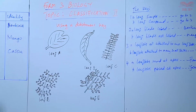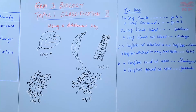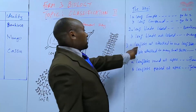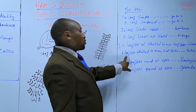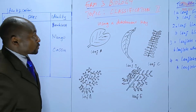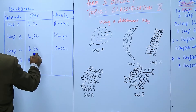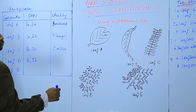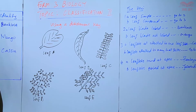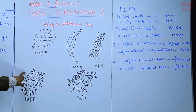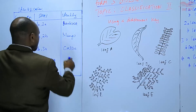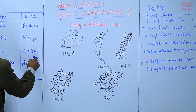For leaf D, it is also a compound leaf, so step 1b, go to step 3. Leaflets attached to one leaf stalk — no. Leaflets attached to many small stalks — yes, this one is attached to many small stalks, so that is step 3b. Then we go to step 4: leaflets rounded at the apex or pointed. These ones are rounded at the apex, so that is step 4a. The identity is Flamboyant.